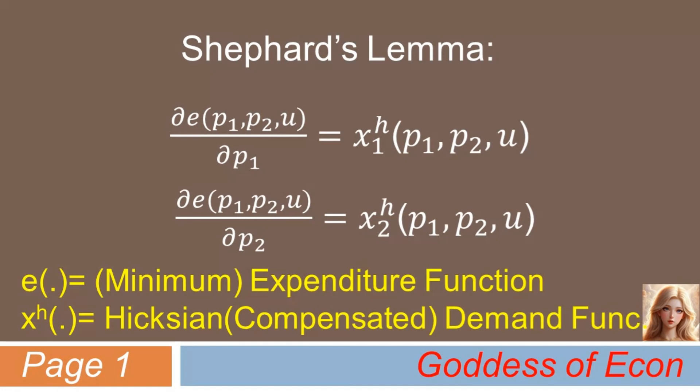if you partially differentiate the minimum or minimized expenditure function with respect to the price of a particular good, then you can derive a Hicksian or compensated demand function for that good. Here, I have just shown the simple case of two goods, x1 and x2, just for the sake of simplicity.